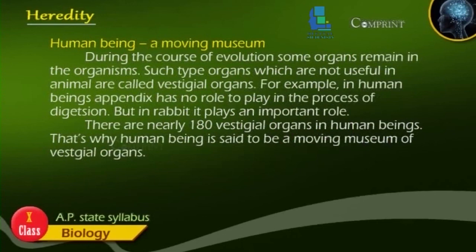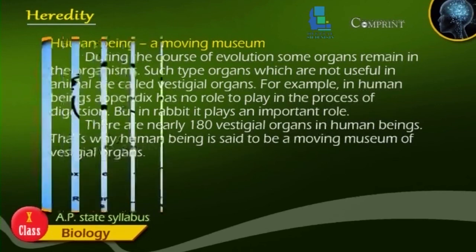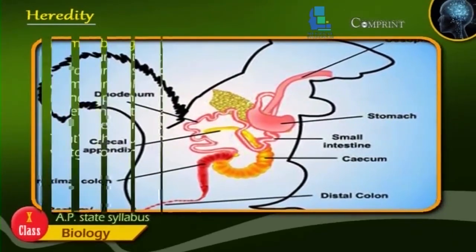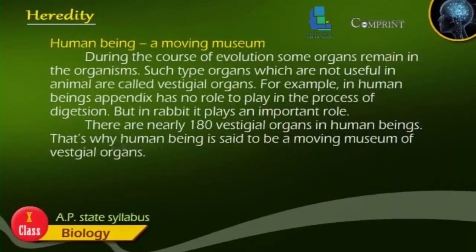Human Being — A Moving Museum. During the course of evolution, some organs remain in organisms even though they are no longer useful. Such organs are called vestigial organs. For example, in human beings the appendix has no role to play in the process of digestion, but in rabbits it plays an important role. There are nearly 180 vestigial organs in human beings. That is why human beings are said to be a moving museum of vestigial organs.